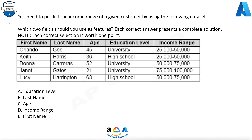Question 47: You need to predict the income range of a given customer using the following dataset. Which two fields should you use as features? Each correct answer presents a complete solution. A) Education level, B) Last name, C) Age, D) Income range, E) First name.